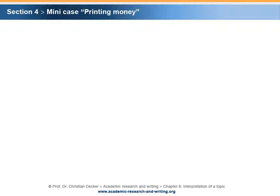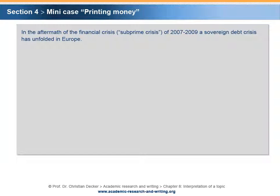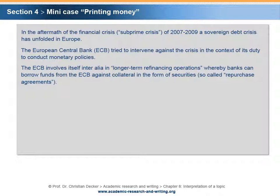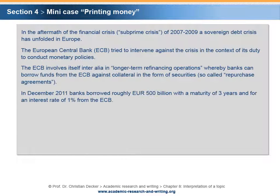The third sample case is entitled Printing Money. In the aftermath of the financial crisis — the so-called subprime crisis of 2007–2009 — the sovereign debt crisis unfolded in Europe. The European Central Bank (ECB) tried to intervene against the crisis in the context of its duty to conduct monetary policies. The ECB involved itself in longer-term refinancing operations whereby banks can borrow funds from the ECB against collateral in the form of securities — so-called repurchase agreements. In December 2011, banks borrowed roughly 500 billion euro with a maturity of three years at an interest rate of 1% from the ECB.